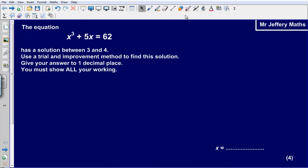Now the main reason that people don't pick up full marks on this question is this sentence at the end here that you must show all of your working. So let's take a look at the question. It says the equation x³ + 5x = 62 has a solution between 3 and 4. Use a trial and improvement method to find this solution. Give your answer to one decimal place and then lastly that killer sentence, you must show all your working.